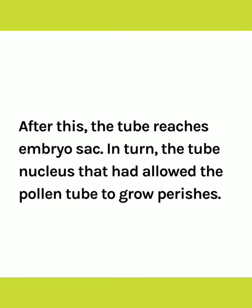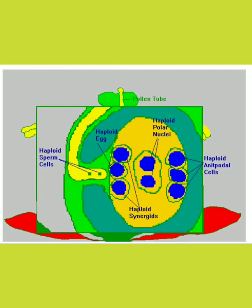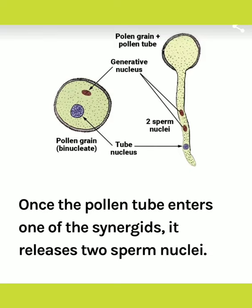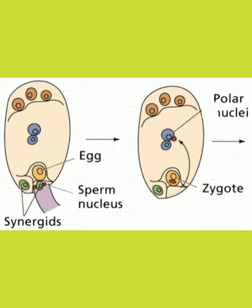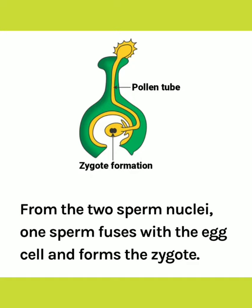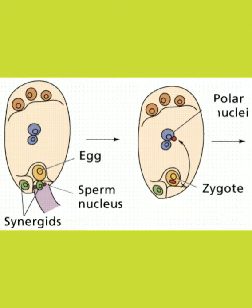The pollen tube pushes through the micropyle and reaches the embryo sac. After that the pollen tube enters one of the synergids and releases its two sperm nuclei. Of these, one sperm nucleus enters the egg cell and fuses with its nucleus, while the other sperm nucleus moves towards the two polar nuclei in the central cell and fuses with them.